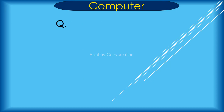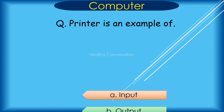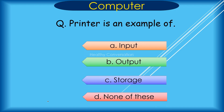Question: A printer is an example of A. Input, B. Output, C. Storage, D. None of these. Correct answer is B. Output.